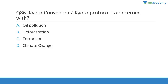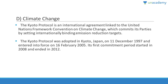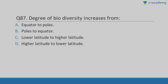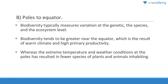Question 86: The Kyoto Protocol is an international agreement linked to the UNFCCC, committing parties to binding emissions reductions. Question 87: Biodiversity increases from poles toward the equator. The equator has the highest biodiversity due to tropical rainforests, abundant sunlight, and water. Going north, south, or upward in altitude reduces biodiversity.